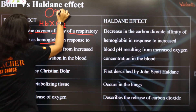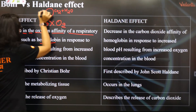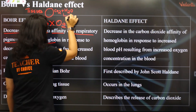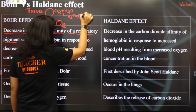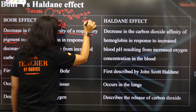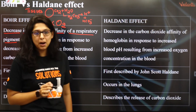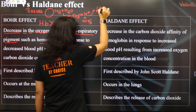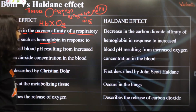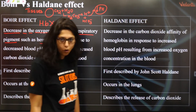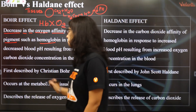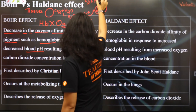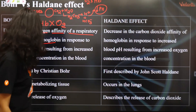So in a RBC, when CO2 and water come together — which is going to happen in the tissues — it will produce H2CO3, which will give you H+ and HCO3-. This is going to decrease the pH. Therefore, when the pH is less in the tissues, because of decreased pH, O2 will dissociate from hemoglobin. That is called the Bohr effect.